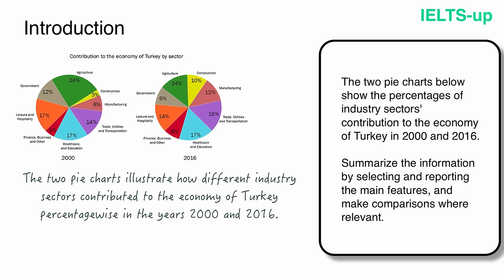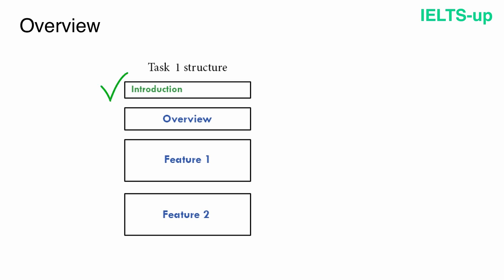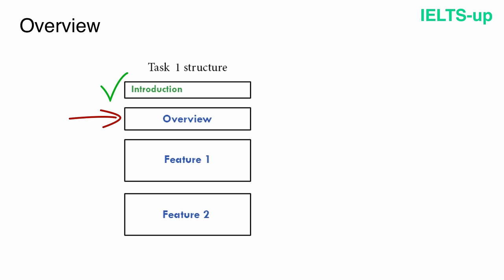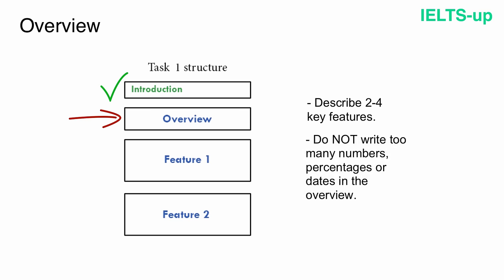When the examiner starts reading the essay, they will easily understand what our pie chart is about. When we finish the introduction, we move on to the general overview paragraph. To achieve a band 6 or more for task 1, you must provide an overview. In the overview paragraph, briefly describe the major features of your pie charts — ideally from 2 to 4 key features. Do not write too many numbers, percentages, or dates in the overview; keep only general information.